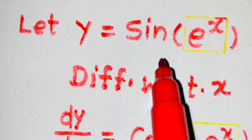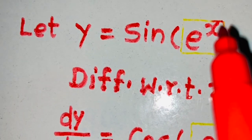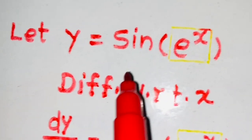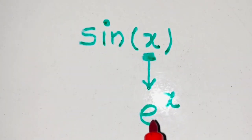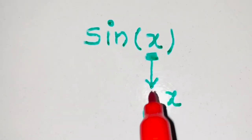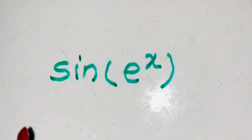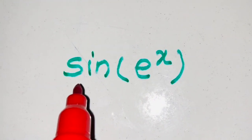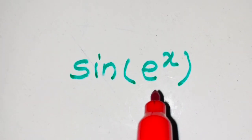That is, y is equal to sine of e raised to x. First of all, let's see why sine of e raised to x is a composite function. In standard form, we have sine of x. This x has been replaced by a new function, that is e raised to x. So we get a function like sine of e raised to x. The outer function is sine, and inside it, the second function is e raised to x — that is why it is a composite function.